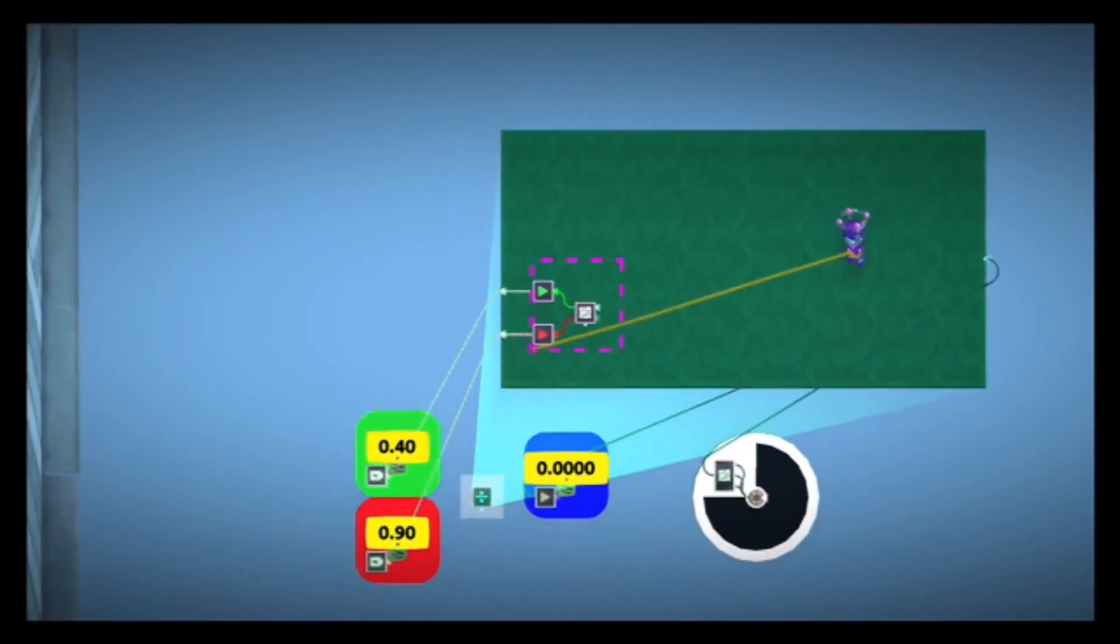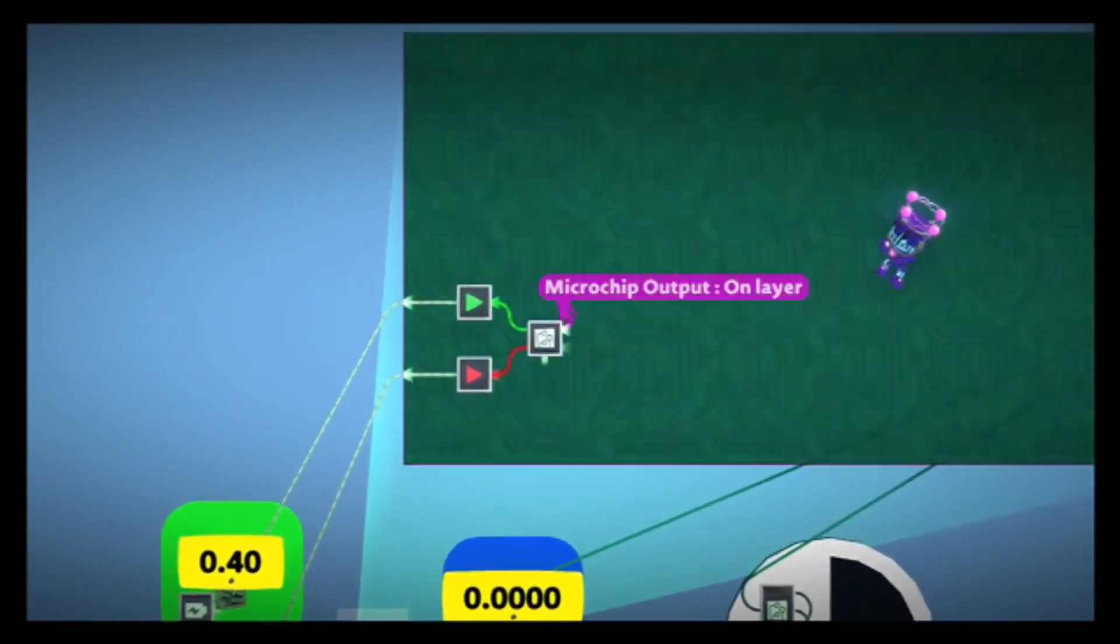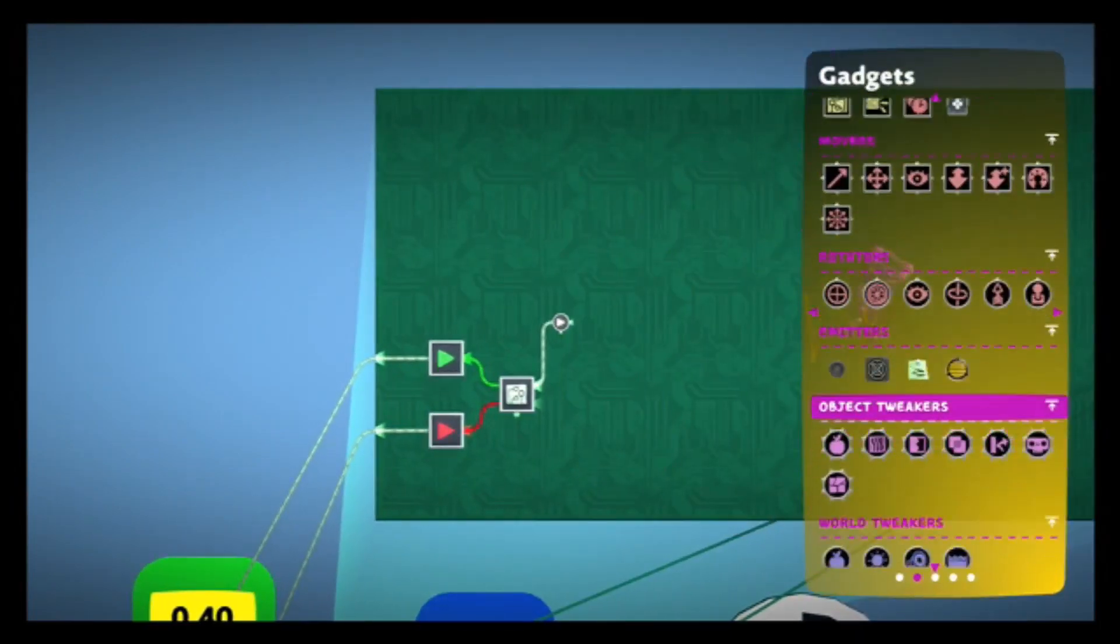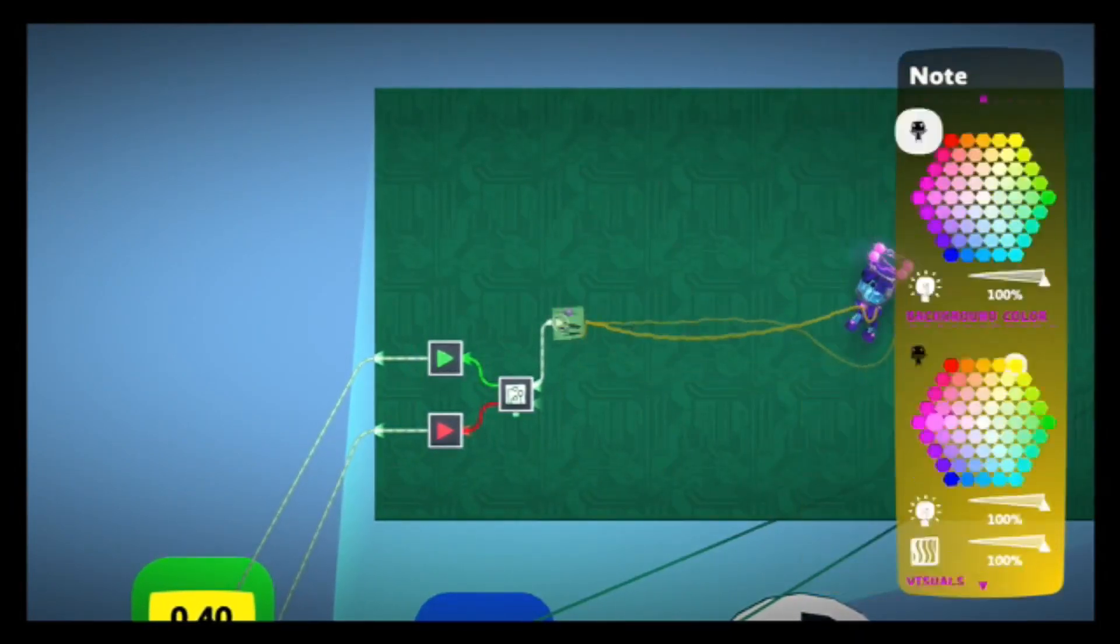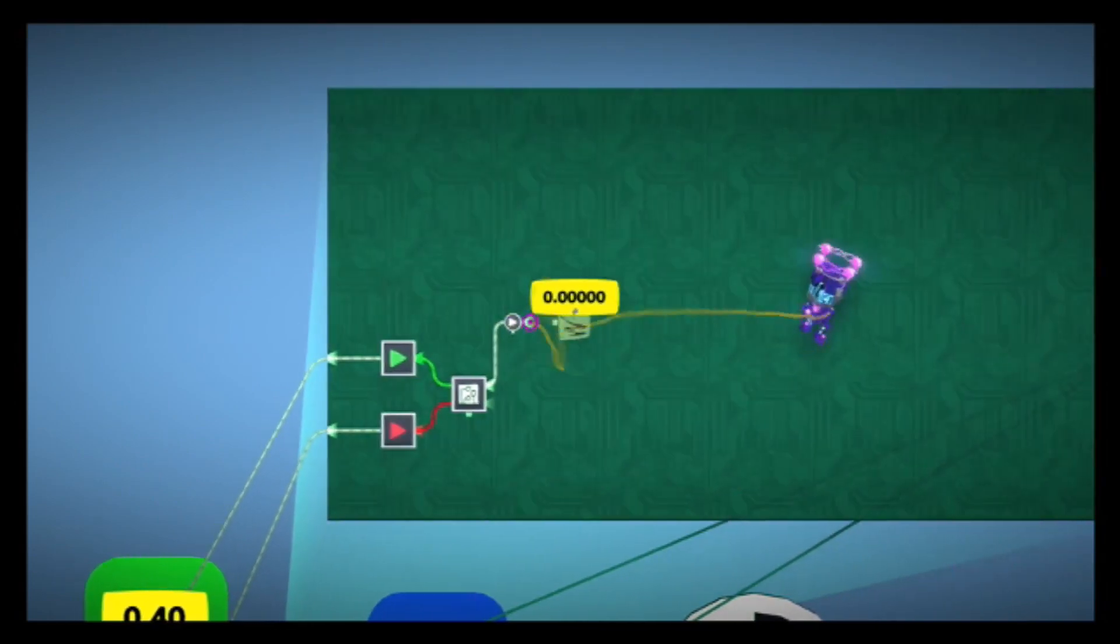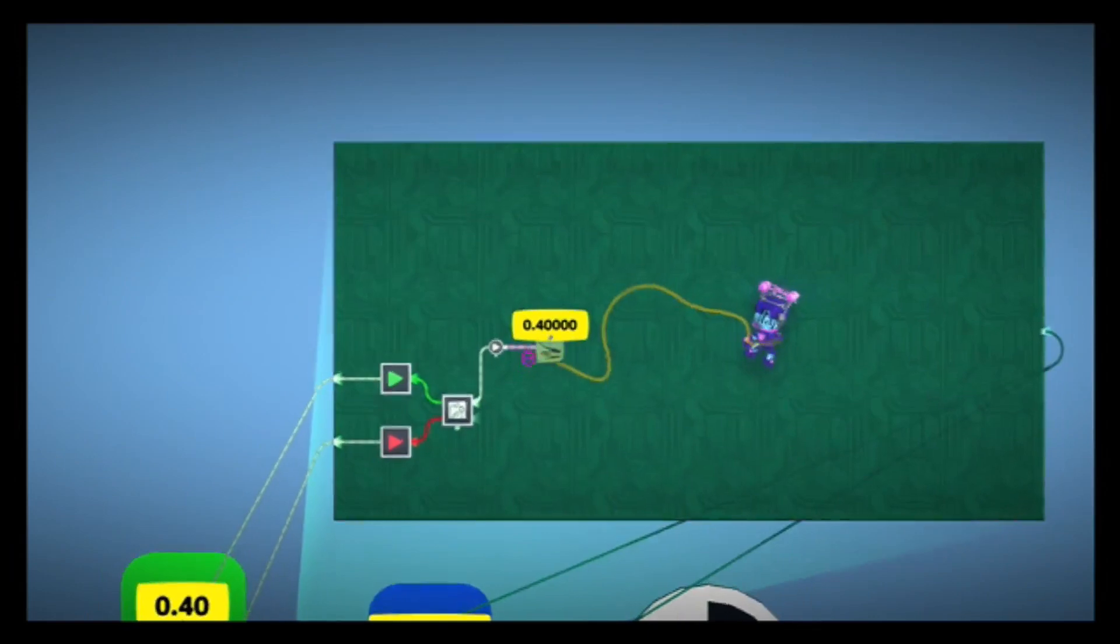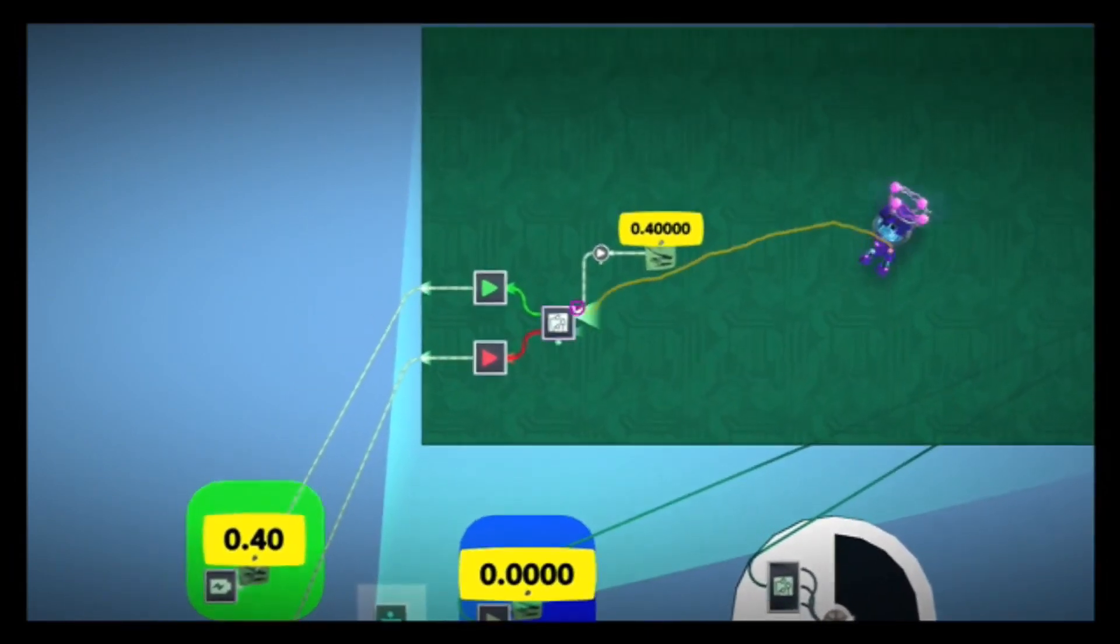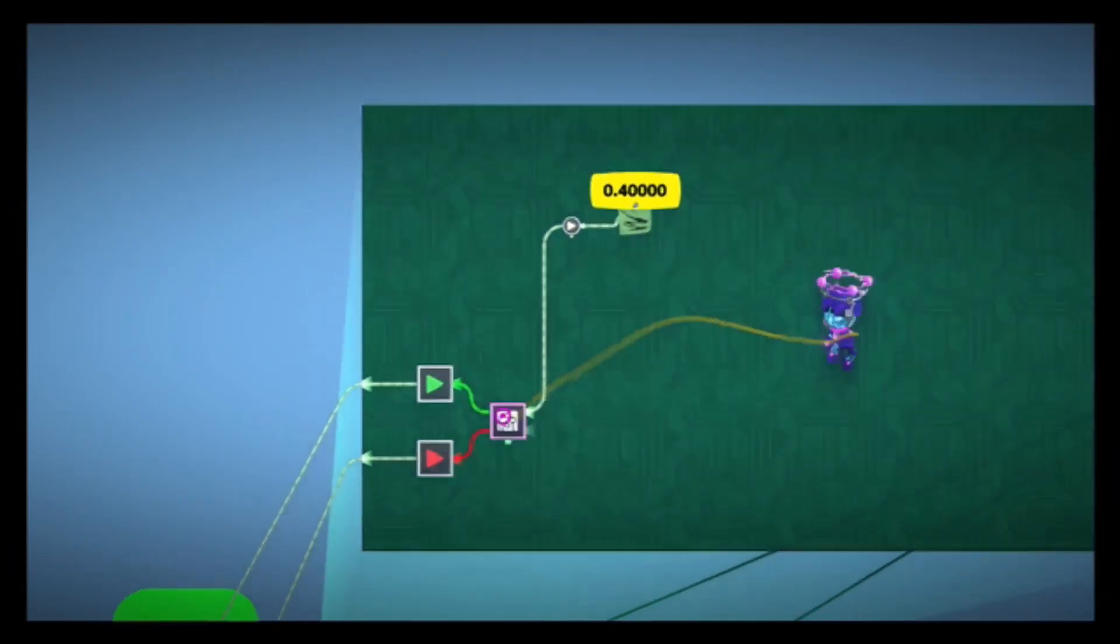Now we can copy and paste this. But first, let's get our outputs ready so we can see some values here. I'm going to use a note and change it to 5 decimal points precision. So indeed, 4 over 9 is 0.4, and it should be 0.444 repeating. So we got the first digit.